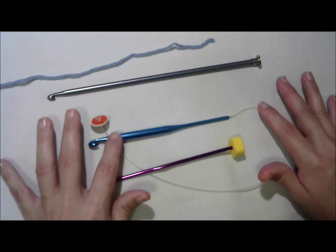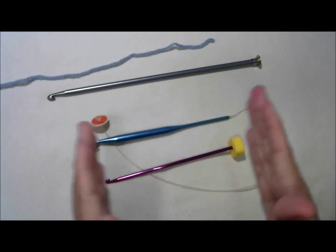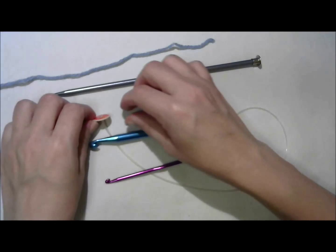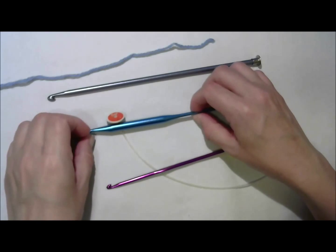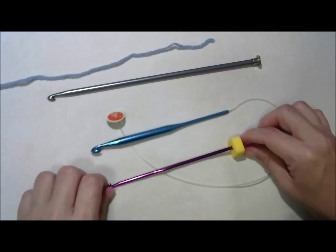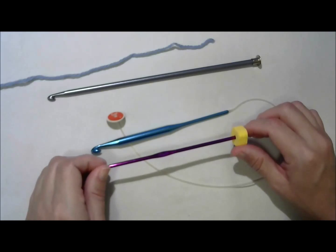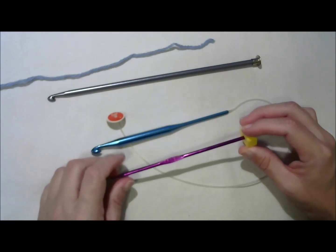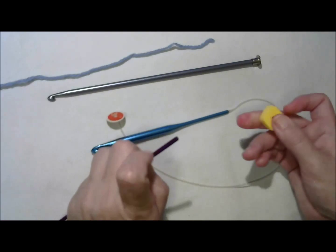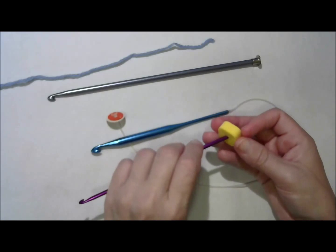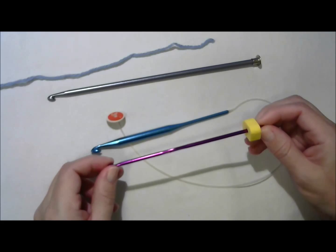And a Tunisian hook with a cord. The cord lets you make really wide pieces. This one, I think, is a K. Then I've got my improvised Tunisian hook, which is actually a regular crochet hook with a foam bead attached to the end to act as the stopper.